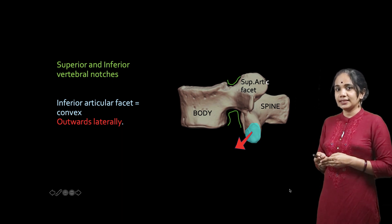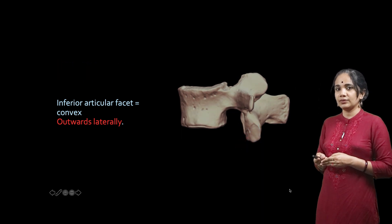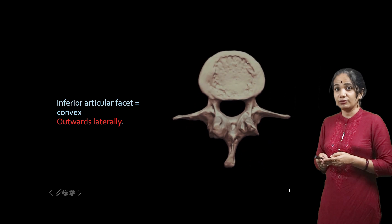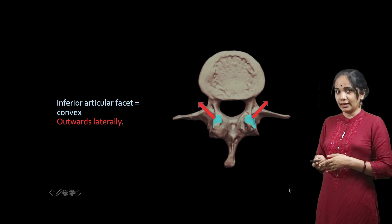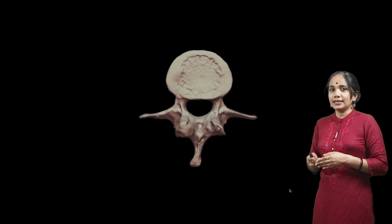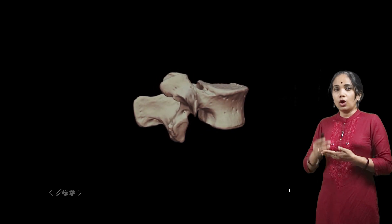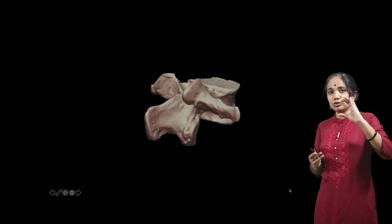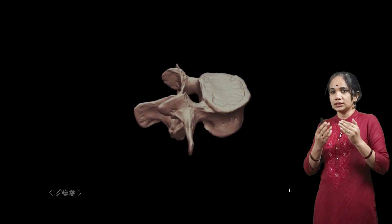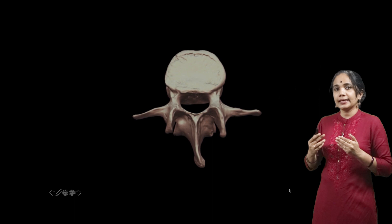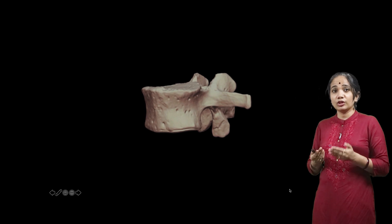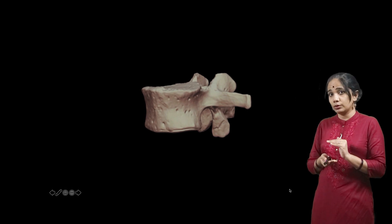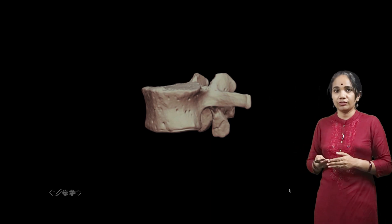Looking at it from the inferior view, the inferior vertebral facets are directed outwards and laterally. The lumbar vertebra is basically designed to bear weight. All five vertebrae are arranged one above the other with those massive bodies because this is the region of maximum bending and rotatory motions of the torso. The body has to be massive in order to support the weight of the vertebral column and to allow for all those rotatory motions.